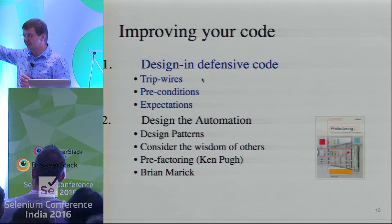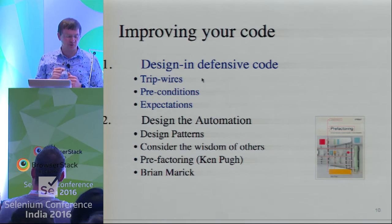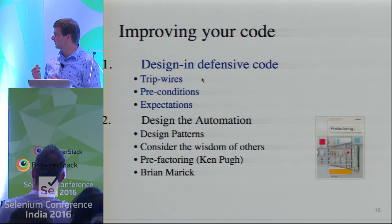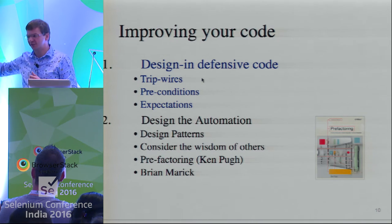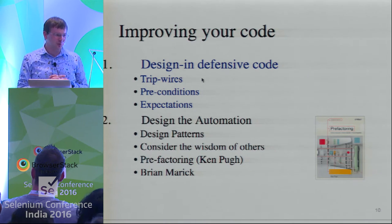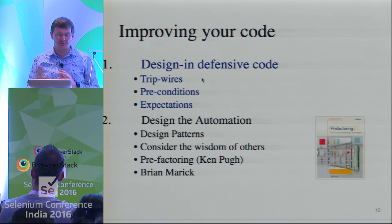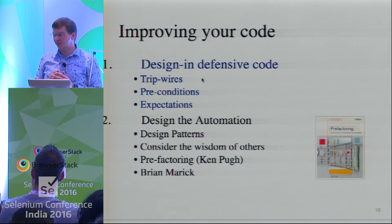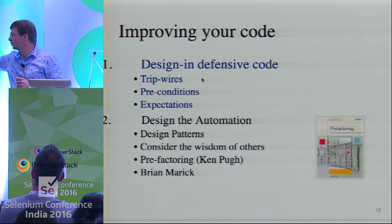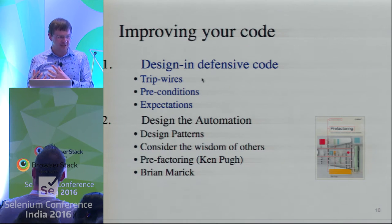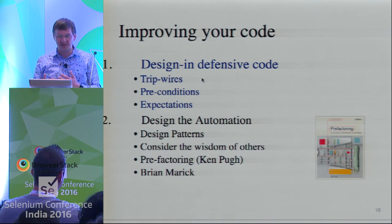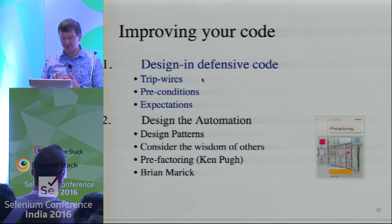In terms of designing automation, there are four or five talks here on design patterns — page object patterns, component patterns — which will be useful. The wisdom of others: Brett Petticord is doing the keynote tomorrow, and he talks about seven steps of success for test automation. There's a lot of wisdom out there. Ken Pugh wrote a book in 2006 called Prefactoring, trying to encourage us to think about what may change in the code and design our code so it continues to work well as the system being tested changes.